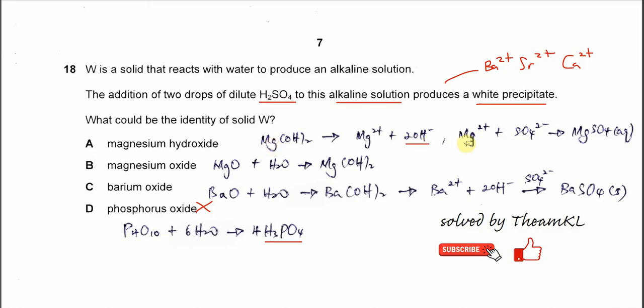And the magnesium ion with the sulfate will not form a precipitate. It's soluble. So magnesium hydroxide is not the answer.